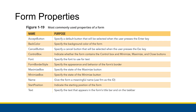Font is the font used for text. Form Border Style controls the appearance and behavior of the form's border. Maximize Box and Minimize Box specify the state of those buttons — both would be true or false. Name should be meaningful and unique, following the naming conventions we talked about. Start Position indicates the starting position of the form on screen. Text specifies the text that appears in the form's title bar and on the taskbar.